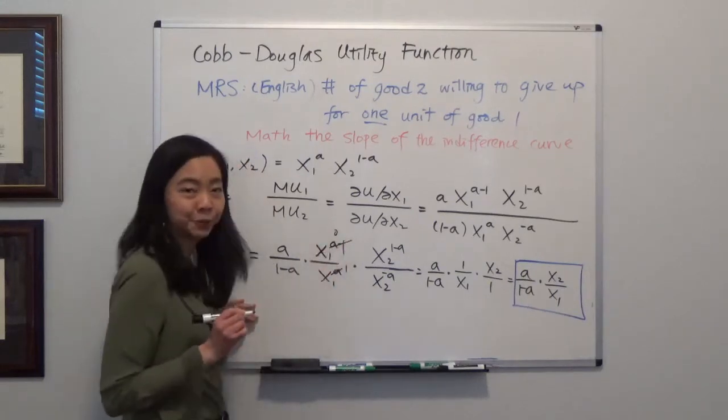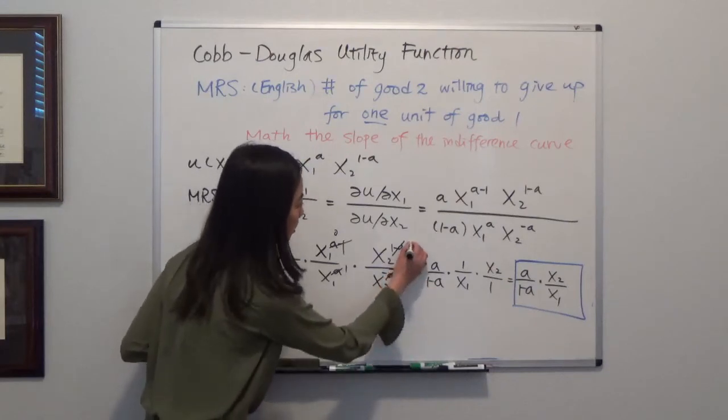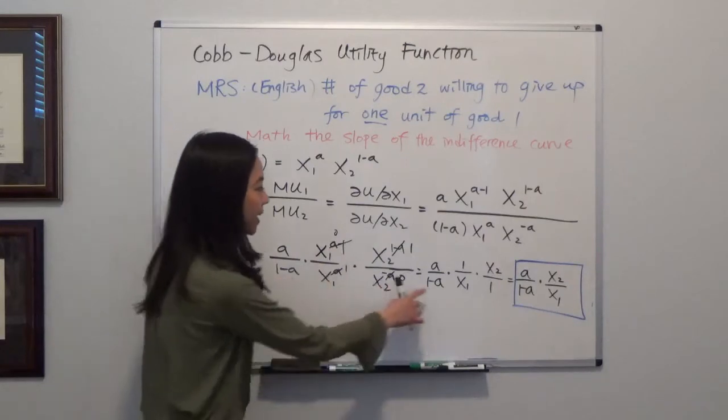And that one turns to zero and that one turns to zero and that one turns to one. And any x to the zero's power is one. So you simplify that.